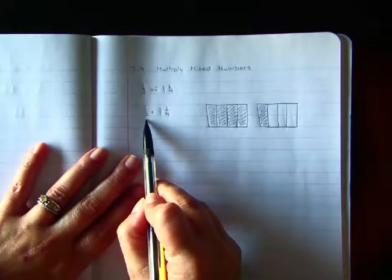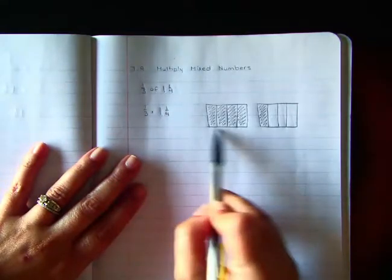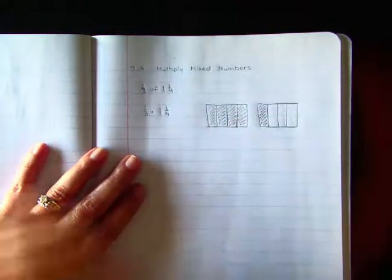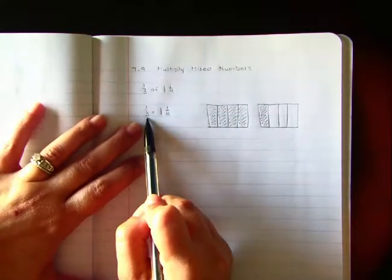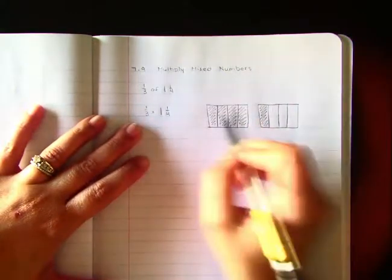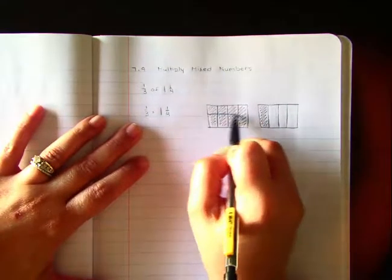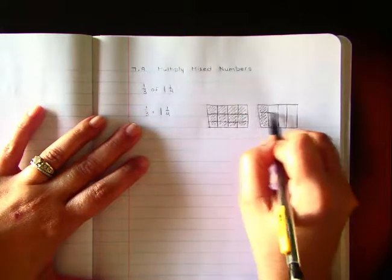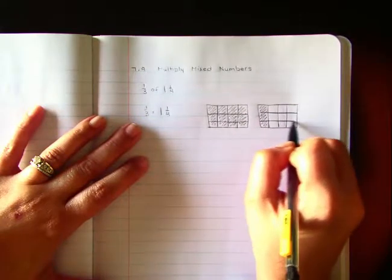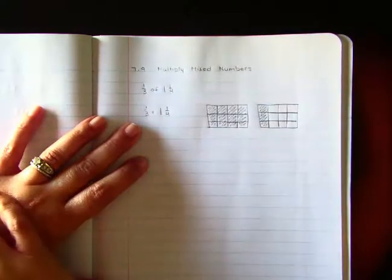Now I need to find one-third of this one-and-one-fourth. So now I'm going to divide these models. I'm going to go the opposite direction by thirds. There's one, two, there's one, and two. So now I have thirds.